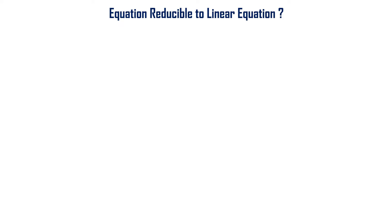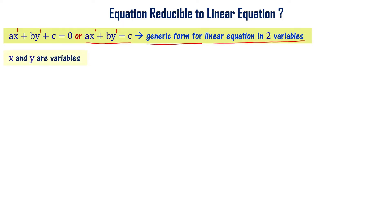First, equation reducible to linear equation is the generic form for a linear equation in two variables. Otherwise, ax plus by equal to c is the generic form. If linear equations, the degree of these equations is 1. x and y are variables, these are linear equations in two variables.